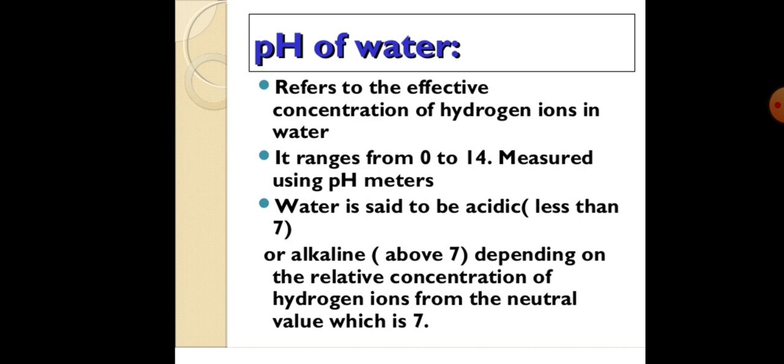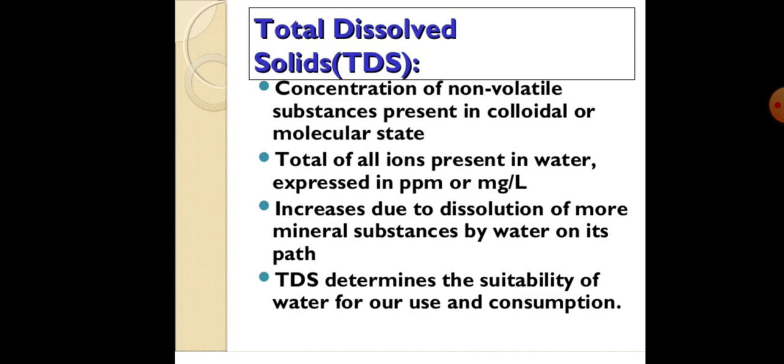The neutral value is 7. Then the next one: total dissolved solids, or TDS. That means the concentration of non-volatile substances present in colloidal or molecular state — the total of all ions present in water, expressed in ppm (parts per million) or mg per litre. TDS increases due to dissolution of more mineral substances by water on its path, and determines the suitability of water for use and consumption.